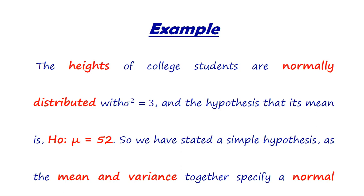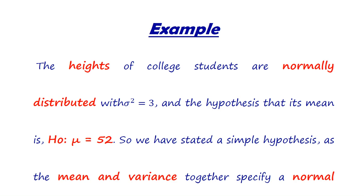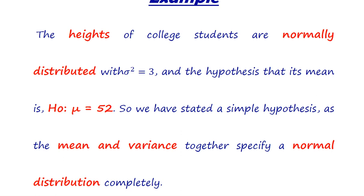We understand this concept with the help of an example. Suppose the height of college students are normally distributed with variance sigma squared equal to 3, and the hypothesis is H naught: mu is equal to 52. In this statement, two parameters — variance and mean — are specified.